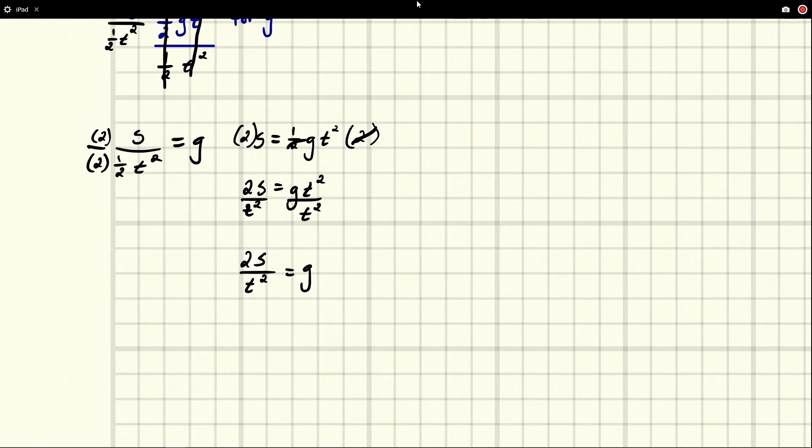So if I multiply by two over two to this thing, the top would just be multiplied across. We'd get 2s, and the bottom, this two would simplify with this two and we'd be left with just t squared. So 2s over t squared equals g. And we see we get the exact same thing.